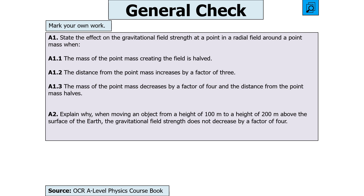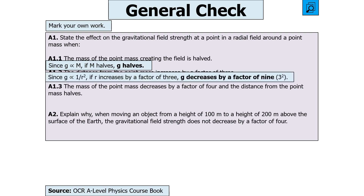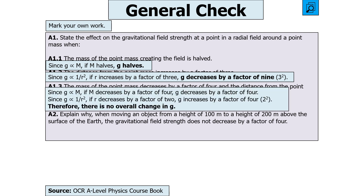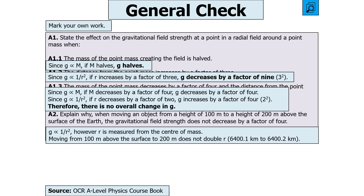The gravitational field strength equation is g = GM/R². Since g is proportional to M, if M halves, g halves. Since g is proportional to 1/R², if R increases by a factor of 3, g decreases by a factor of 9 (3 squared). Combining: if M decreases by 4, g decreases by 4; if R halves, g increases by 4 — so they cancel and there's no overall change. Importantly, R is measured from the centre of mass, not the surface. Moving from 100 m to 200 m above Earth doesn't double R, which is why g doesn't decrease by a factor of 4.